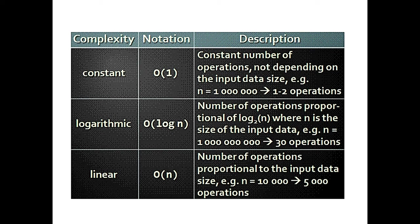O(1) constant algorithm — whenever you use a stack, like in a function call, everything is pushed onto the stack. Push or pop of an operand is a constant amount of time. O(log n) logarithmic time — if you put your values in a binary search tree, you can retrieve in O(log n) time. If you put it in a list you get O(n) time. O(log n) is much smaller because you divide and conquer — you check if a number is on the right or left side of the binary search tree.